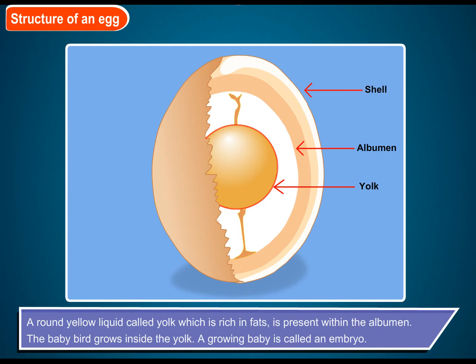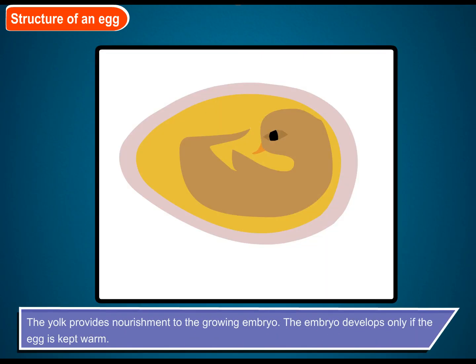The baby bird grows inside the yolk. A growing baby is called an embryo. The yolk provides nourishment to the growing embryo. The embryo develops only if the egg is kept warm.